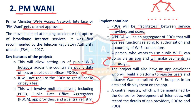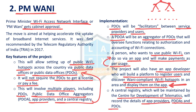App developers build the platform to register users and discover Vani-compliant Wi-Fi hotspots in public areas, displaying them on the app. Consumers register in the app and discover and use the Wi-Fi hotspot. The Centre for Development of Telematics records the details of app providers, PDOAs, and PDOs. This is how PM Vani will further enhance digitization in India.